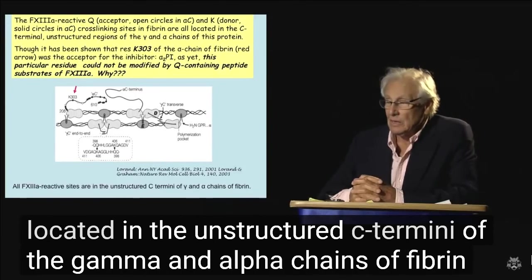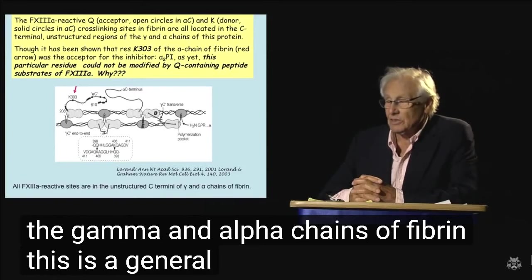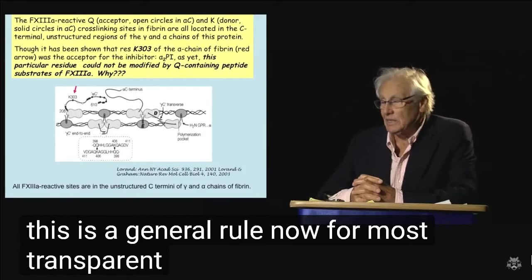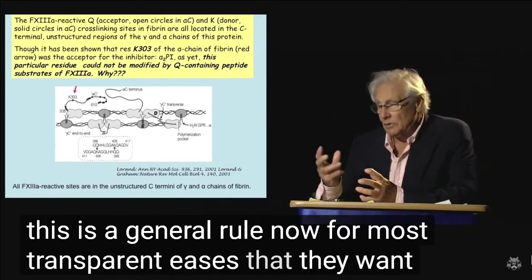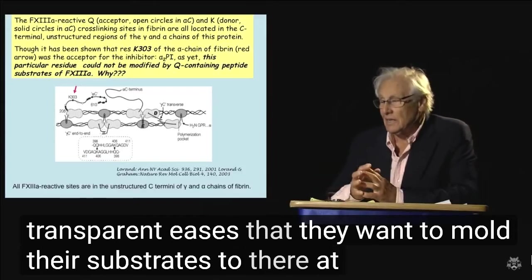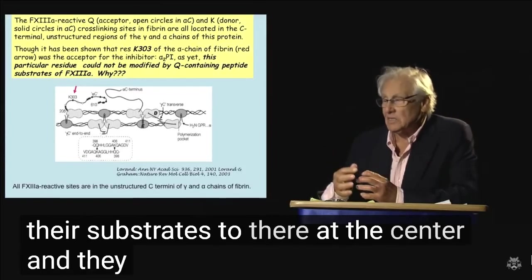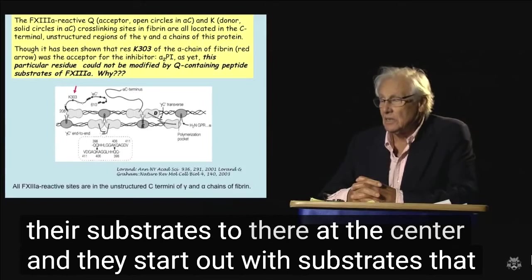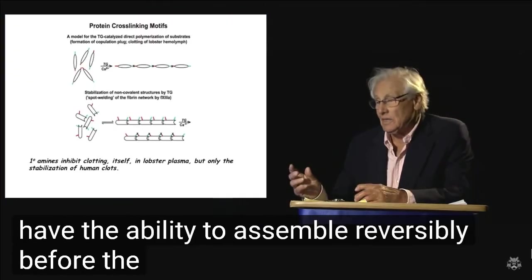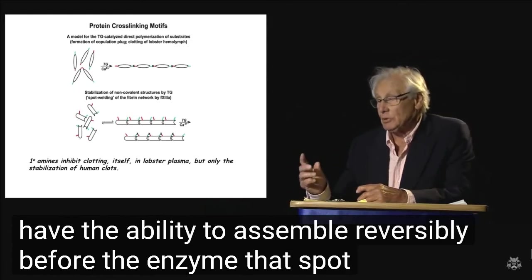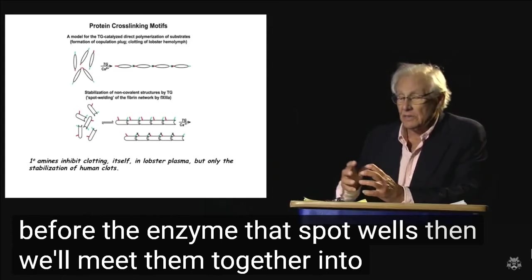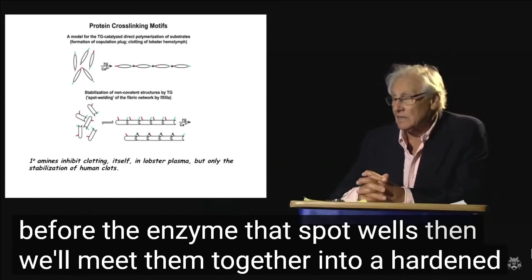This is a general rule now for most transglutaminases, that they want to mold their substrates to their active center, and they start out with substrates that are essentially unstructured. The enzyme that spot welds them will knit them together into a hardened cloth.